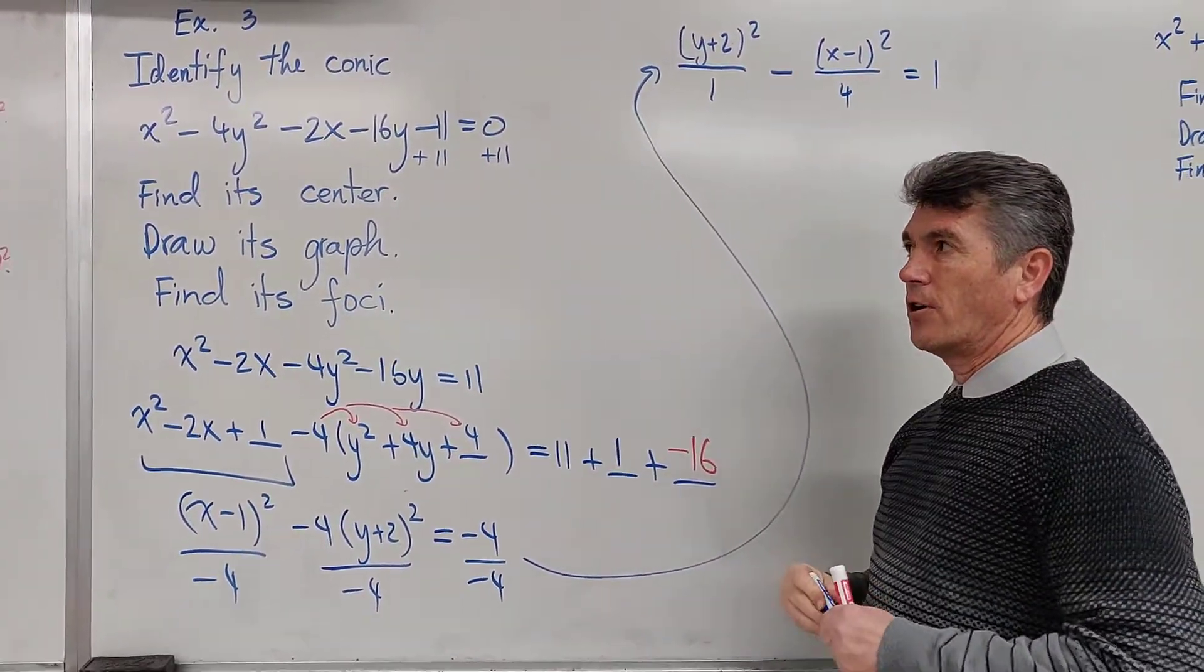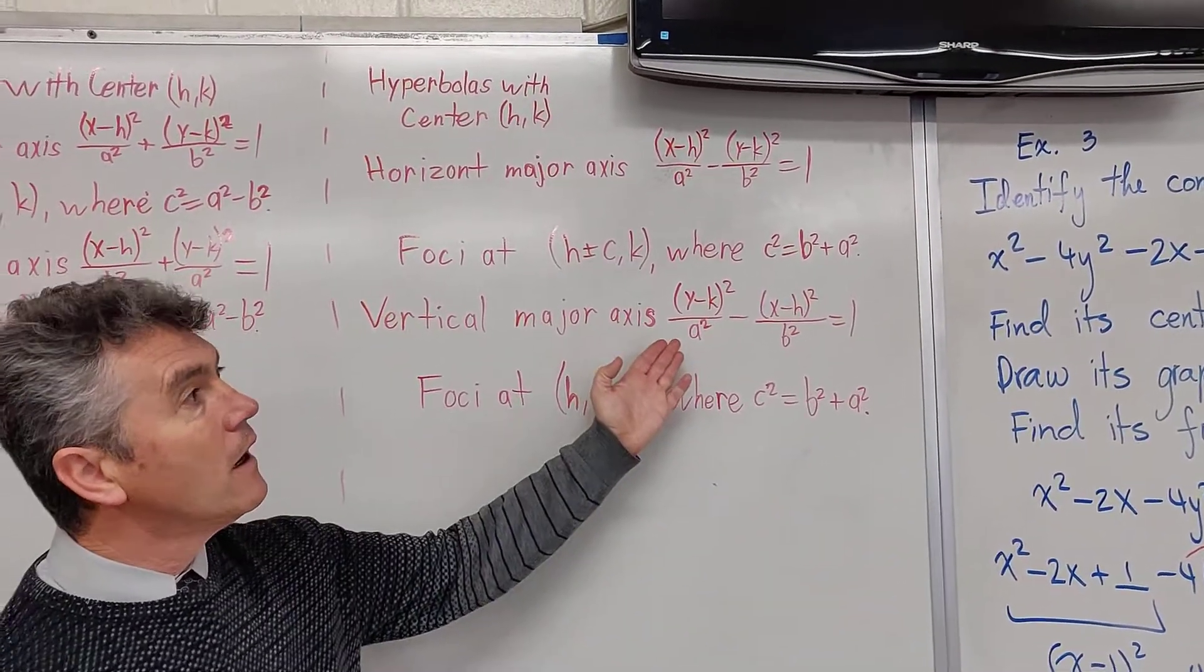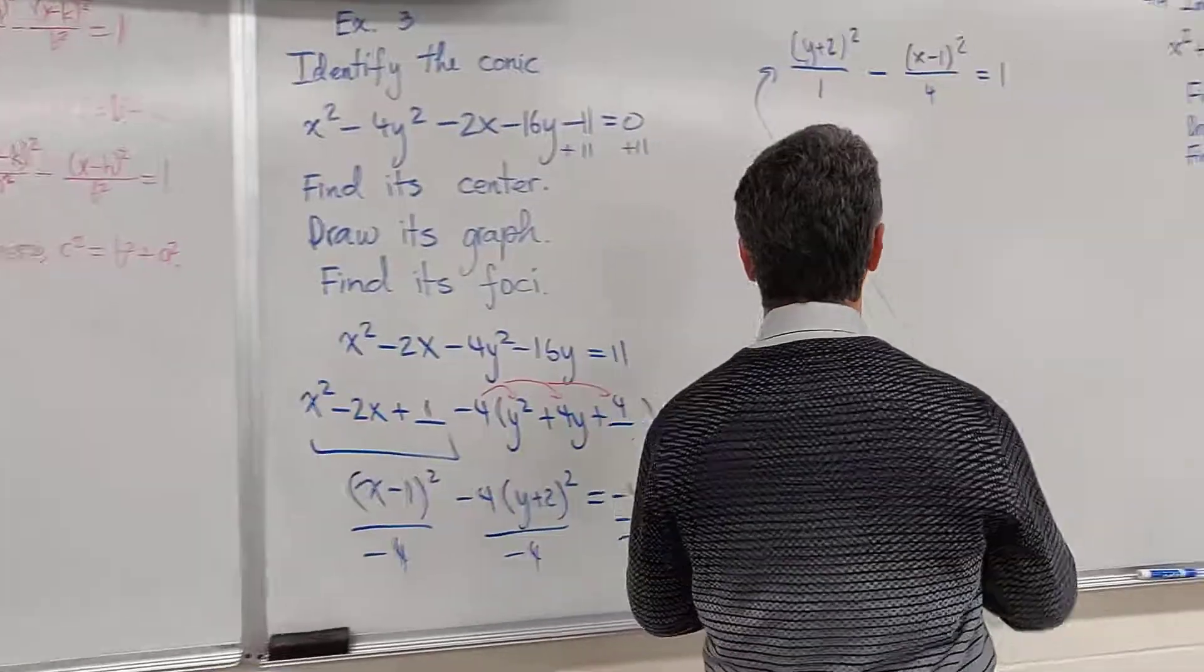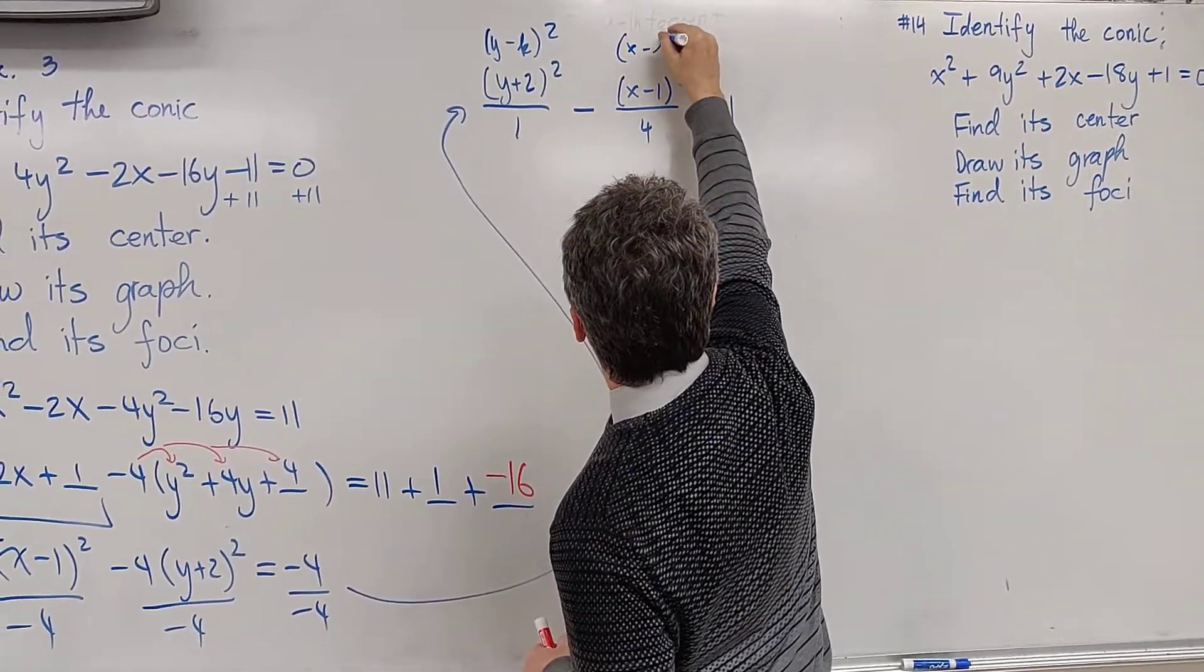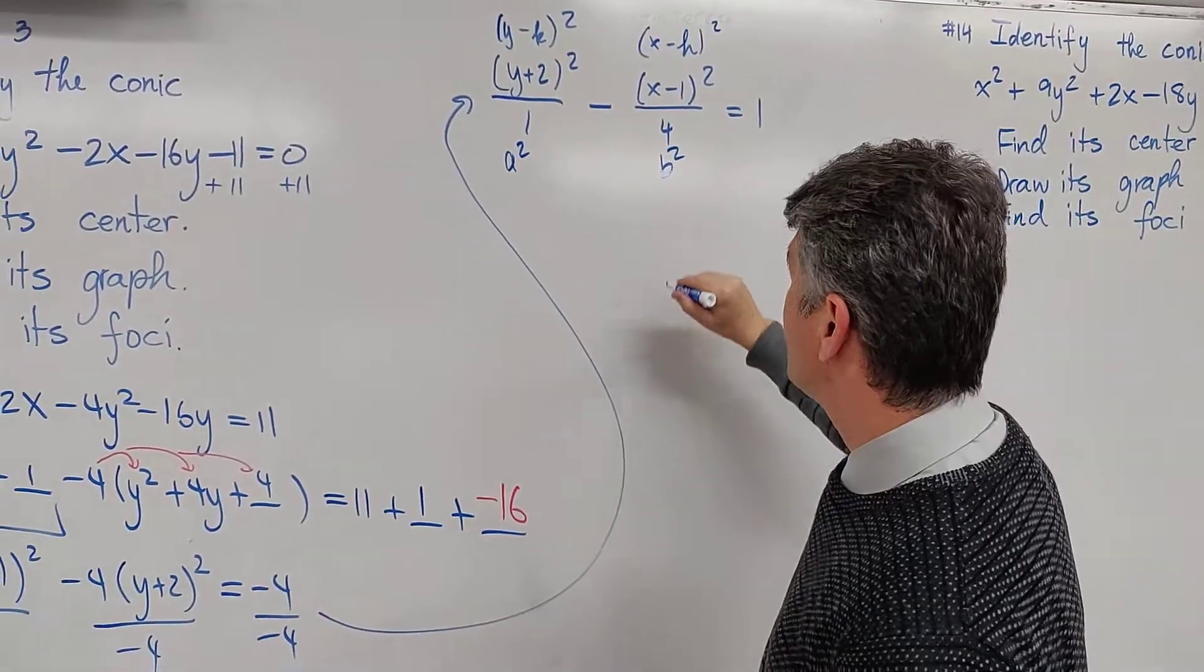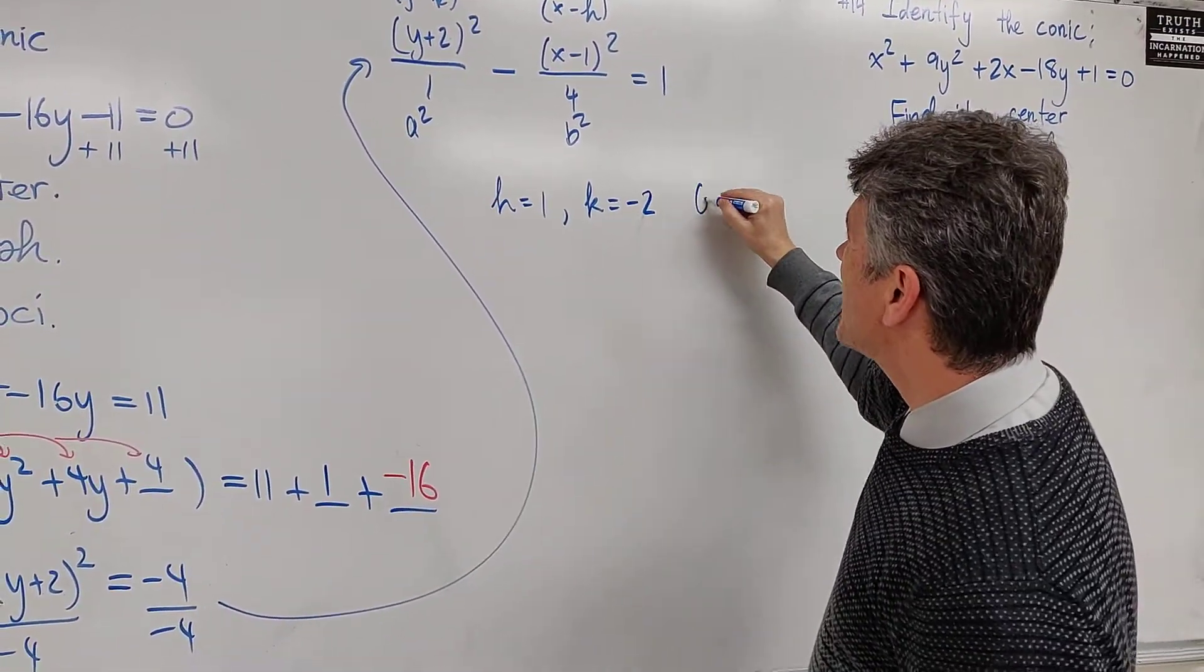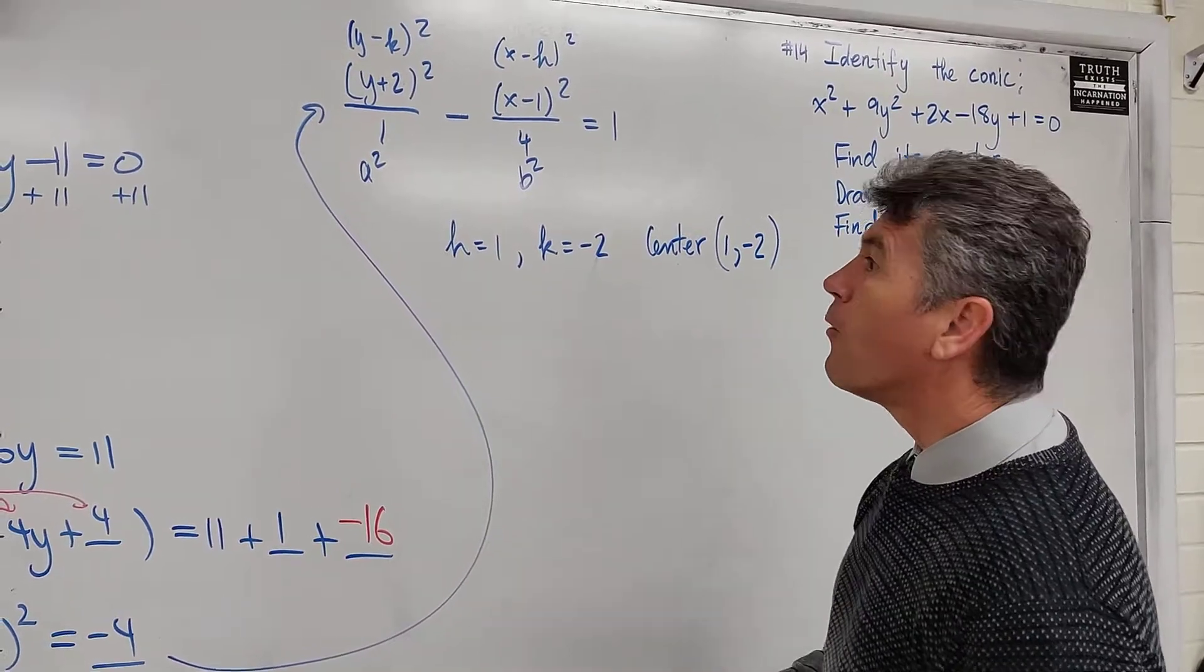Now you should be able to recognize your conic, then move to the front of the board one more time. Look at what we have accomplished. The equation that we got looks exactly like this one. So let's find its center. Here, the top looks like y minus k, quantity squared, and then x minus h, quantity squared. This is your a squared, this is your b squared. So h is equal to 1, k is equal to negative 2. The center is 1, comma, negative 2. One part done.